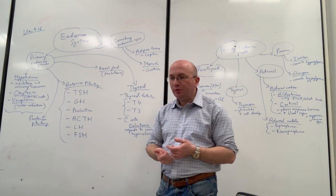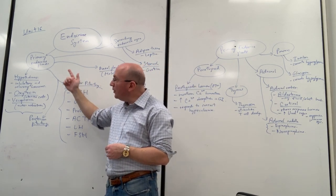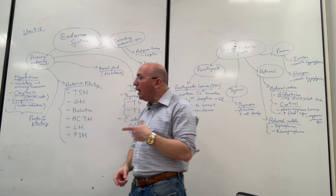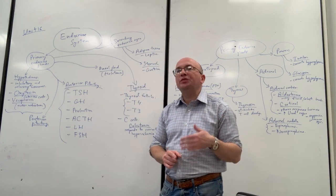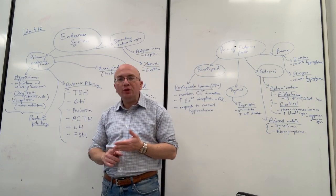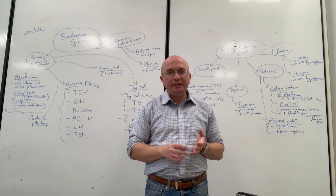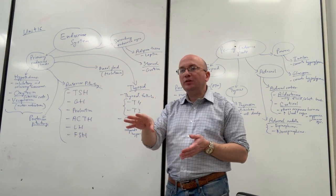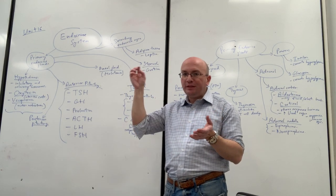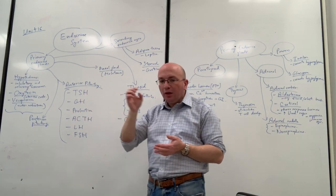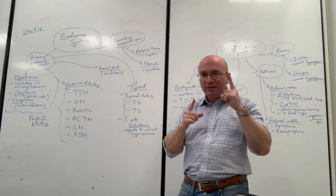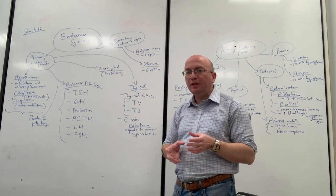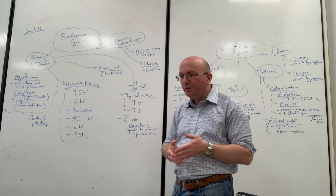Oxytocin is the first hormone we're studying here — released by the hypothalamus and then released into the bloodstream from the posterior pituitary. Oxytocin has multiple functions, and we're still learning more about it. One main function is that it helps with uterine contractions during the last stages of labor when a woman is giving birth. Oxytocin is released by the posterior pituitary, goes to the uterine smooth muscle — which is involuntary — and those contractions speed up the expulsion of the fetus from the body during labor and delivery.